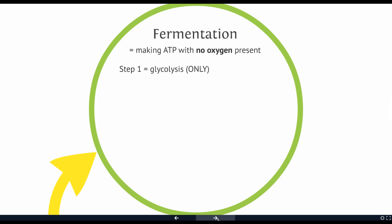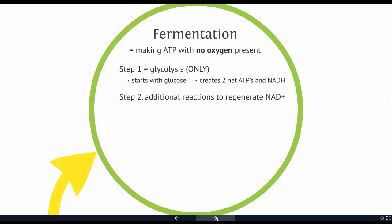There are two steps to fermentation. The first step is glycolysis. We're going to start with glucose and create two net ATPs and some NADHs. But that's all we're going to create — we're not going to create any additional energy carriers through the Krebs cycle, and we're not going to create additional ATP through oxidative phosphorylation.